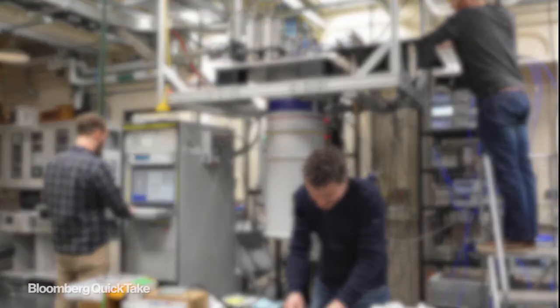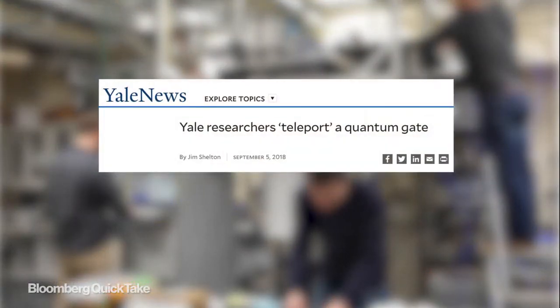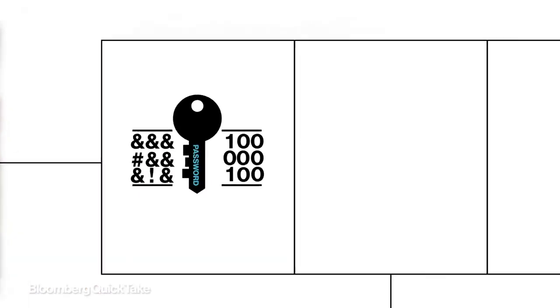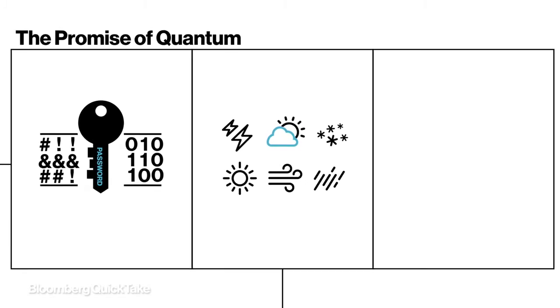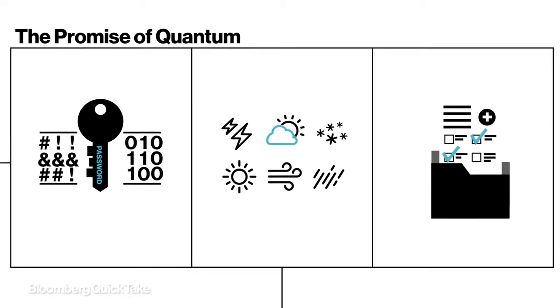There's a lot of hype around quantum computers, and researchers continue to make incremental advances. Evangelists promise machines that can break the most impenetrable coded messages, more accurately predict weather patterns, and instantly diagnose and treat disease based on a specific patient's body.